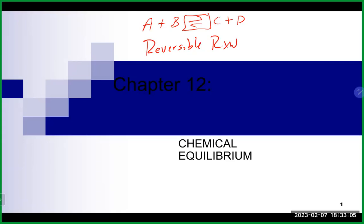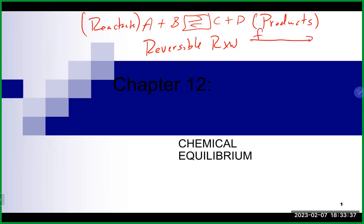A reversible reaction has two directions. On the left-hand side are the reactants, and on the right-hand side are the products. When we have a reversible reaction, going from reactants to products is referred to as the forward direction. At some point, enough products will be made that they will recombine and head back toward the reactant side — that is referred to as the reverse direction.